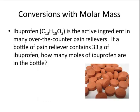Just like we did mole conversions with atoms, we can also do mole conversions with chemical formulas. So ibuprofen is the active ingredient in many over-the-counter pain relievers. It has a chemical formula of C13H18O2. If a bottle of the pain reliever contains 33 grams of ibuprofen, how many moles of ibuprofen are in the bottle? So the first thing we need to do is calculate the molar mass of ibuprofen. Using your calculator, you would go 13 times 12.01, because that's the mass of carbon, 18 times 1.01 for the mass of hydrogen, and 2 times 16 for the mass of oxygen. And add those numbers together to get a molar mass of 206.31 grams per mole.